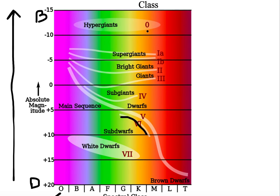So we have nine total categories of luminosity classes.